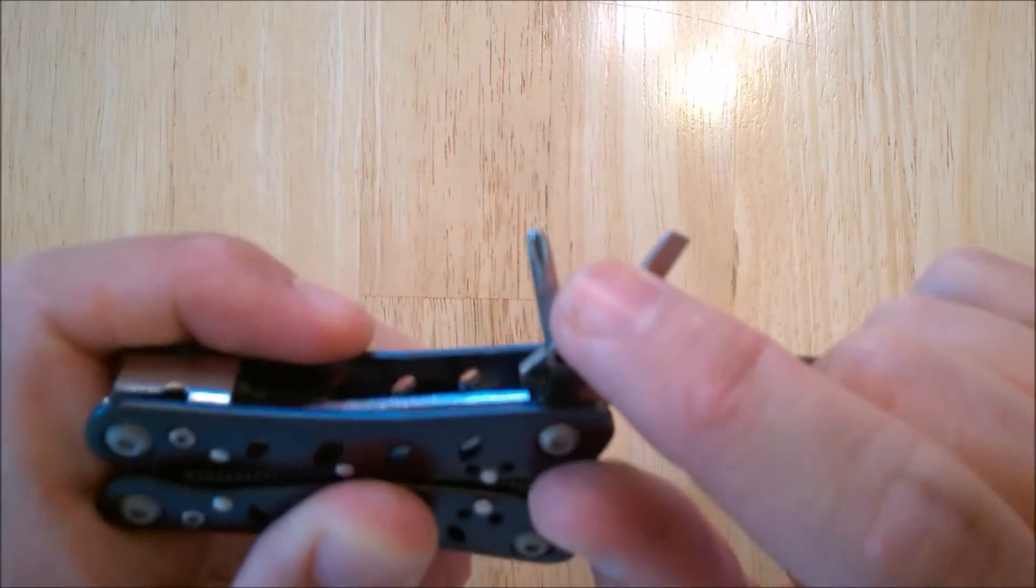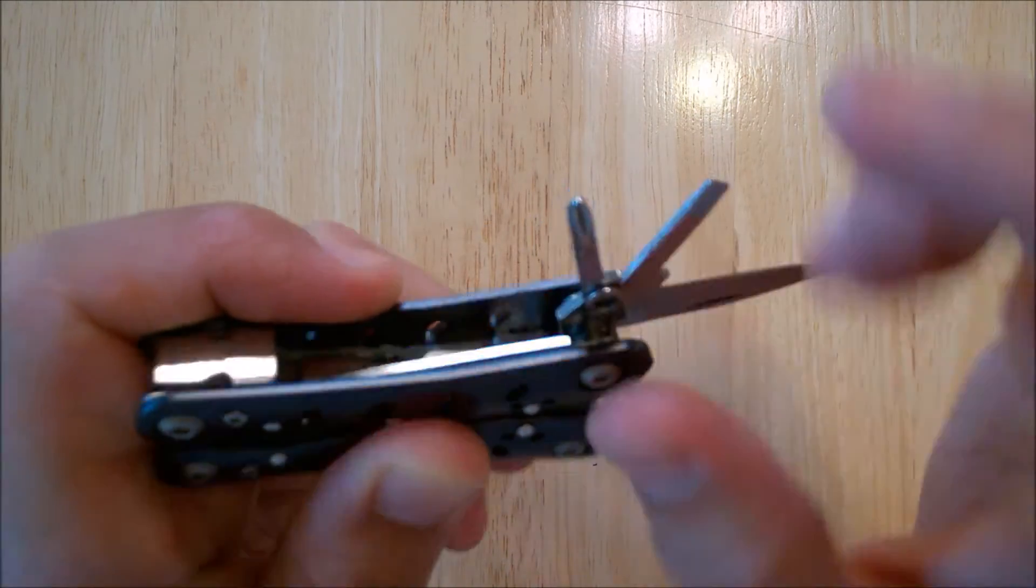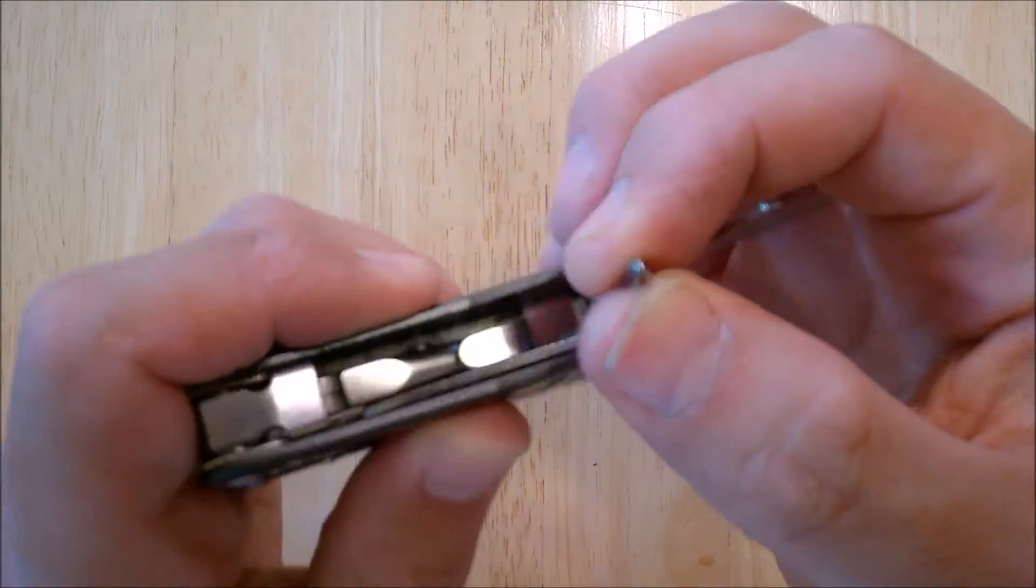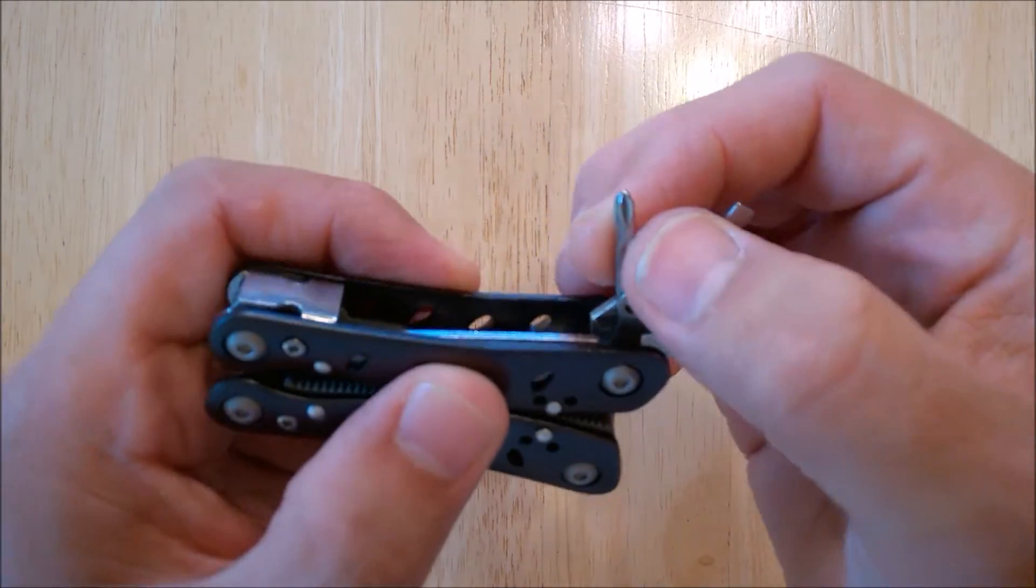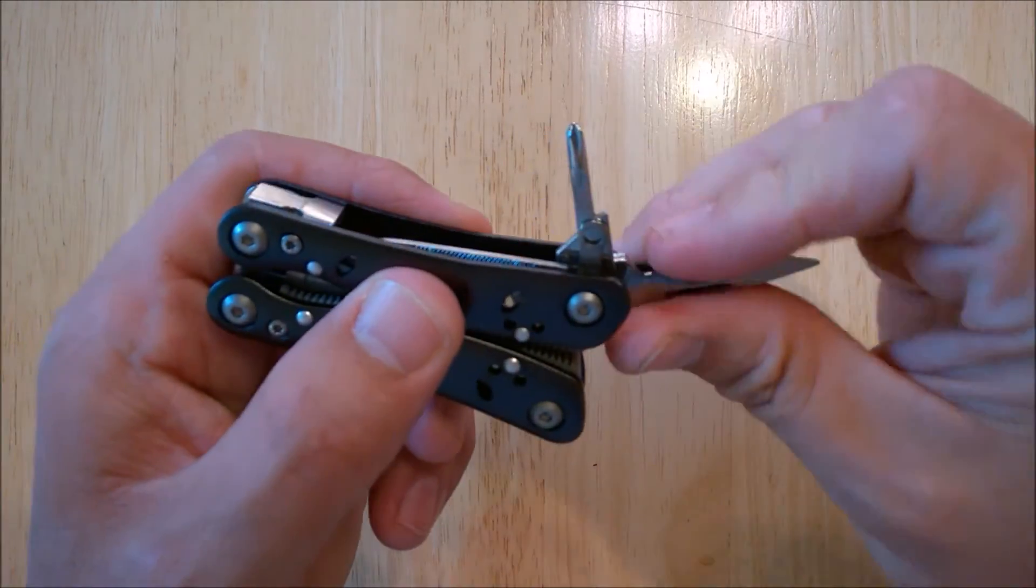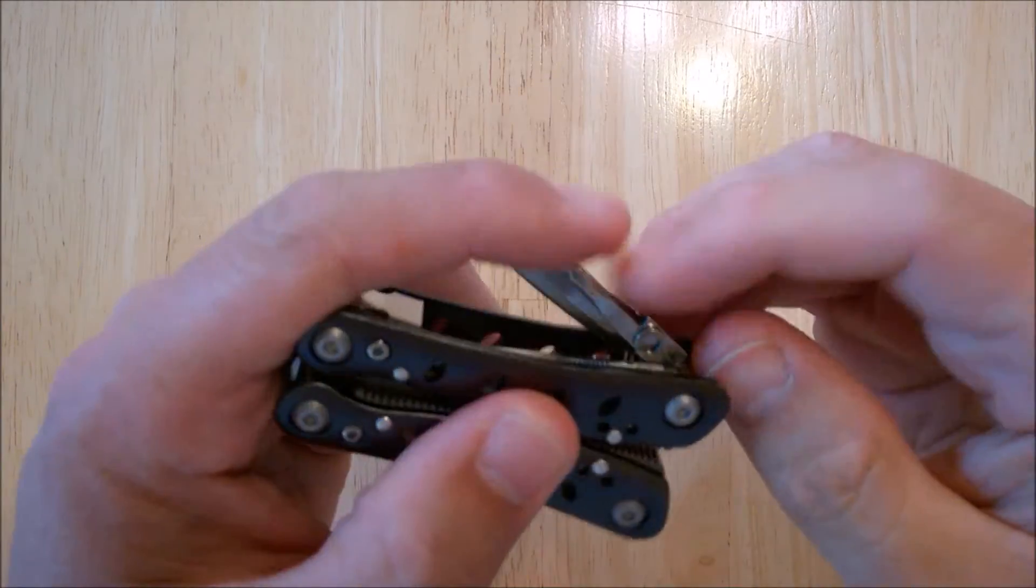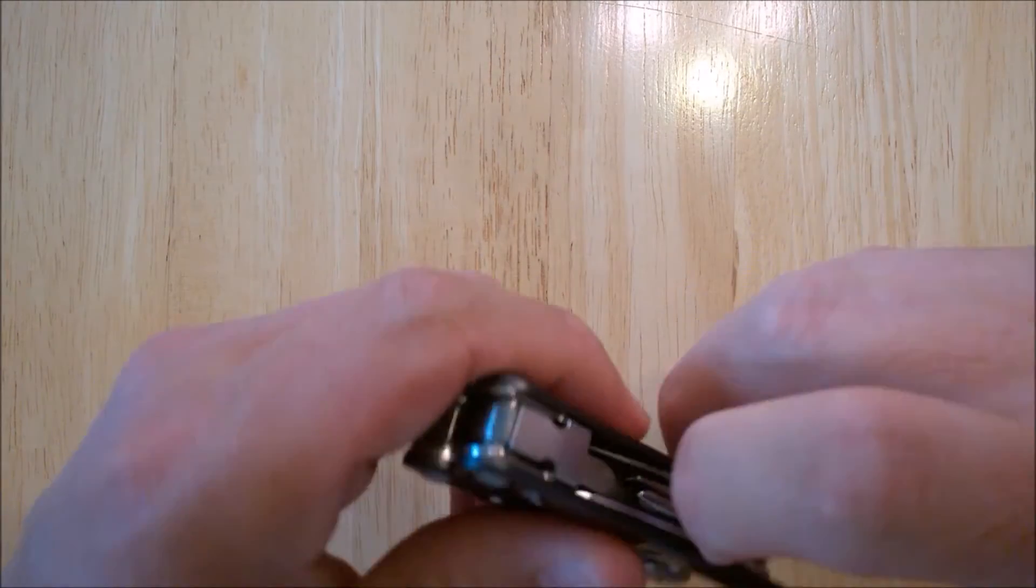You've got a small Phillips, which is your cross tool. That's a little bit too big for eyeglasses and too small for your regular household screws. But there are screws that you'd come across that it would work for.